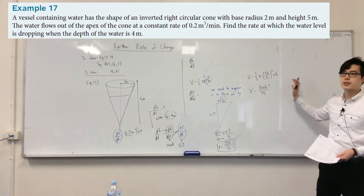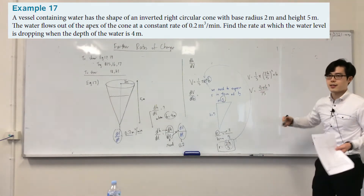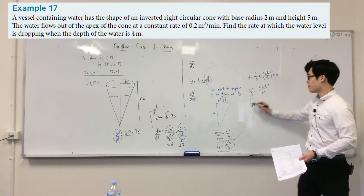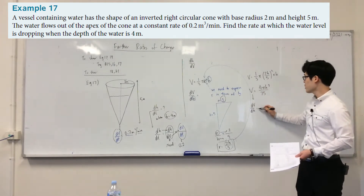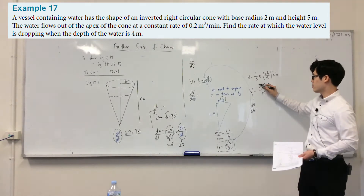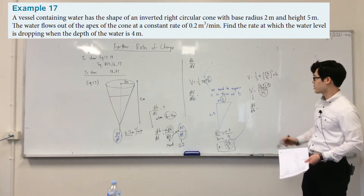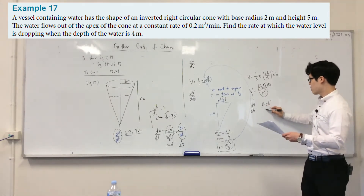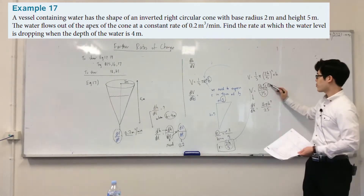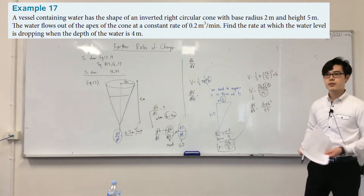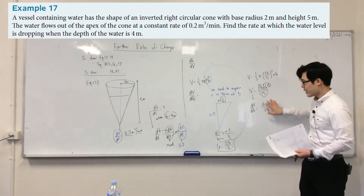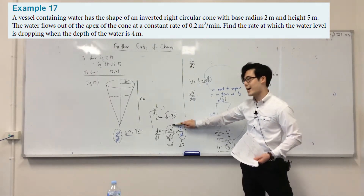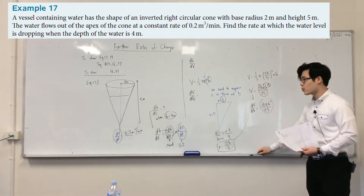Now V is entirely in terms of h — pi is a number, not a variable — so we can differentiate. Differentiating gives dV/dh. You multiply through normally: three times four over 75 simplifies to four over 25, giving dV/dh = (4π/25)h².